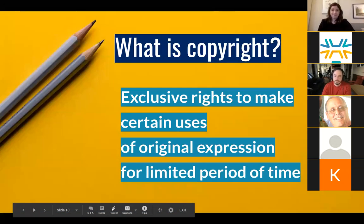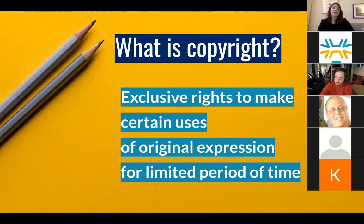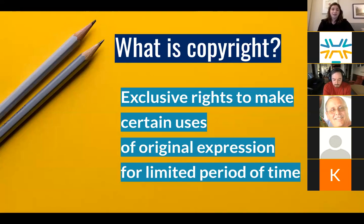We're going to start with copyright. In order to understand what we can do with other people's data, we first have to have a basic understanding of what copyright is and what its limits are when it comes to data. At its core, copyright is simple. Congress created a collection of statutes to implement a provision of the Constitution. That provision authorized Congress to — quote — 'promote the progress of science and the useful arts by securing for limited times to authors and inventors the exclusive right to their respective writings and discoveries' — end quote. And they meant science broadly here to include all sorts of scientific, scholarly, and creative endeavors.